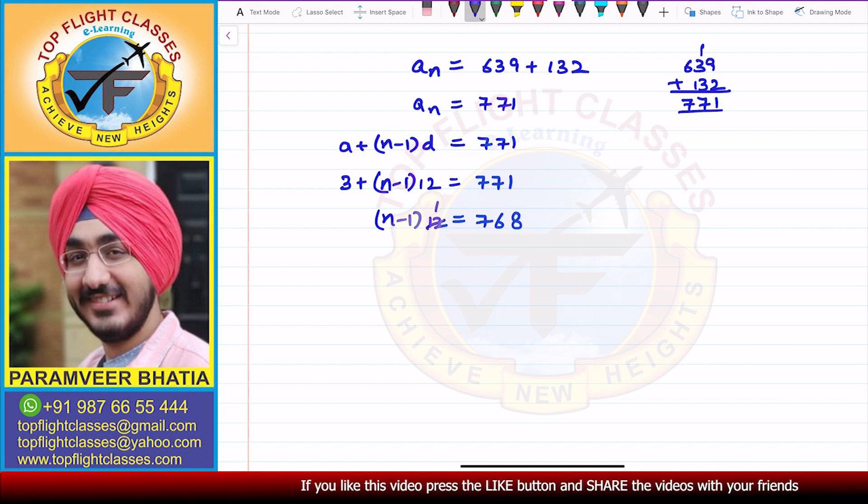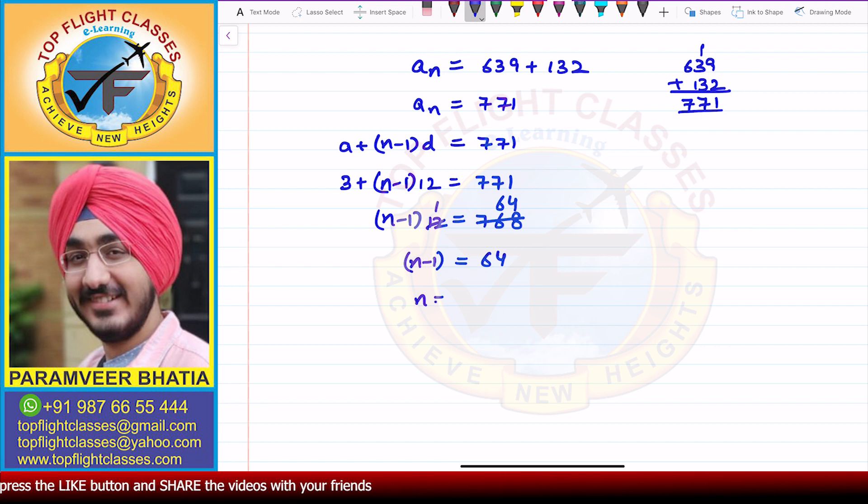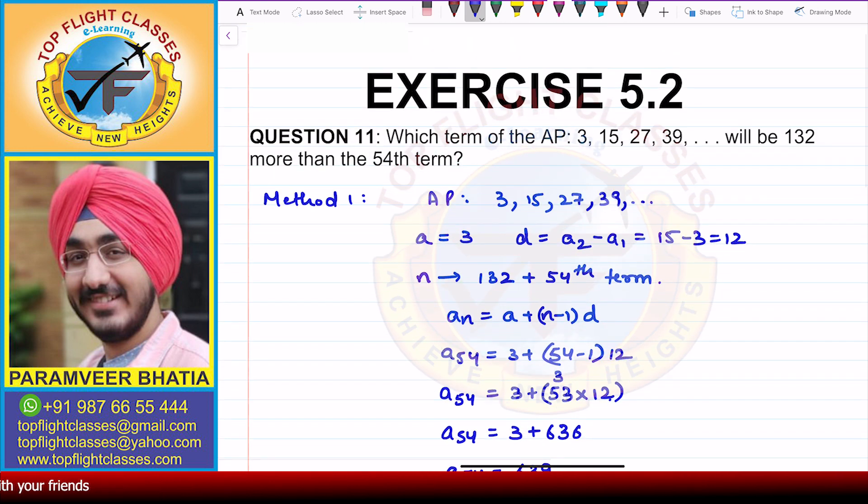Now, dividing 768 by 12, we get N minus 1 equals 64. And we get that N equals 64 plus 1, which is 65. The 65th term is the required term that will be 132 more than the 54th term.